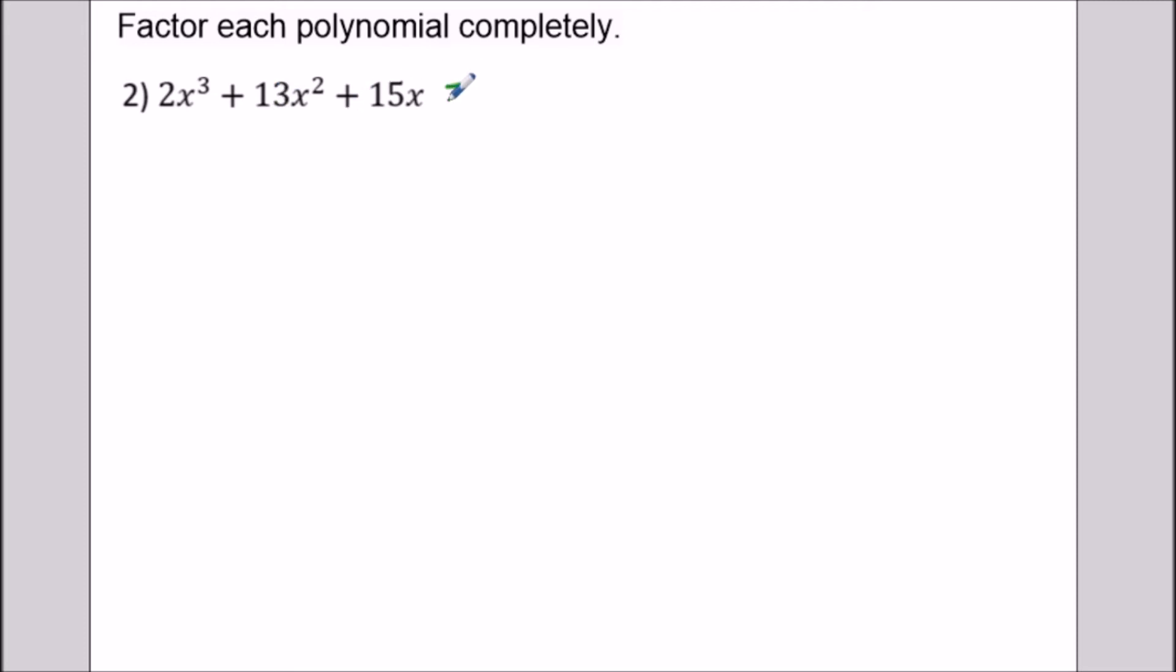Now since 2 and 13 are prime we know there's going to be no numerical component to the greatest common factor so for now we're just going to write x times and that's going to reduce all the x's by a power of 1. So we have 2x² + 13x and then we've got +15 at the end here. Now at this stage I'll kind of take you through the thought process. So when I'm thinking about these kind of questions I notice that it's a quadratic expression with the leading term other than 1.